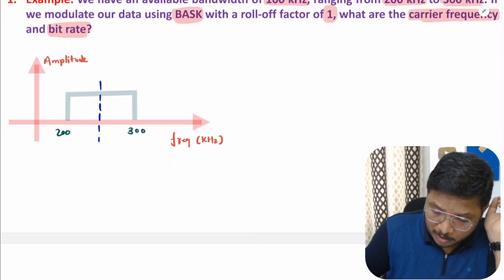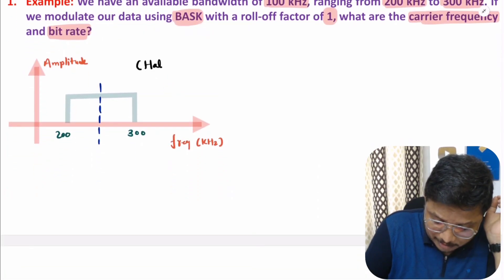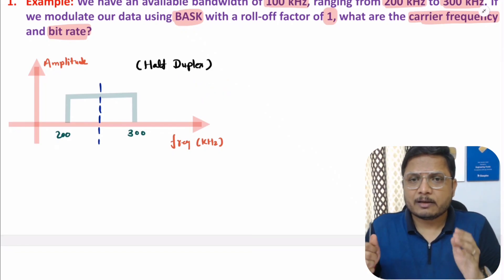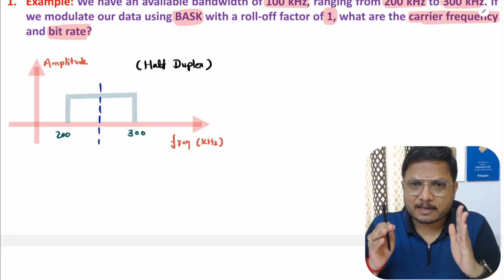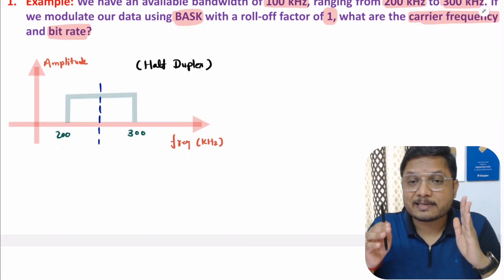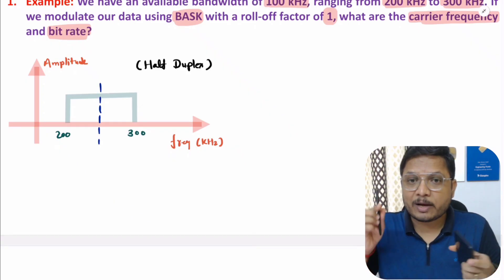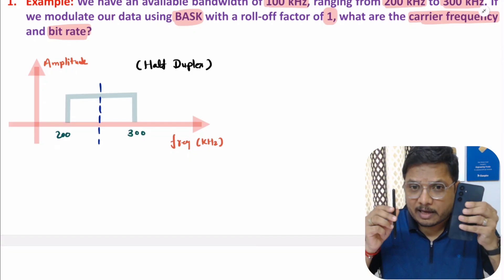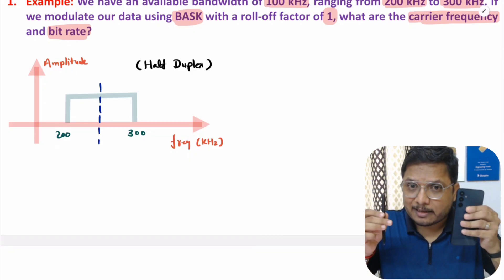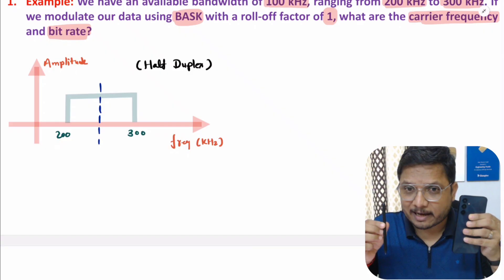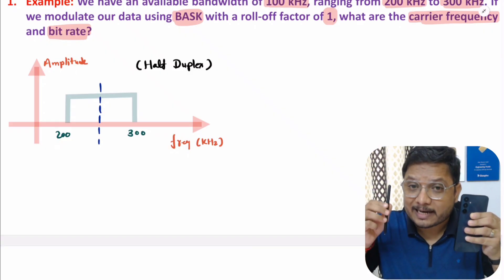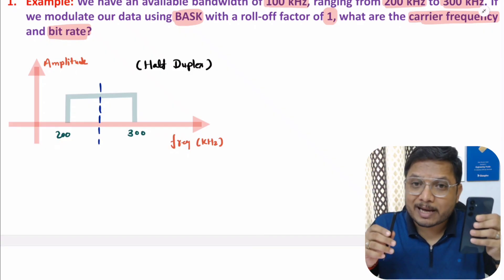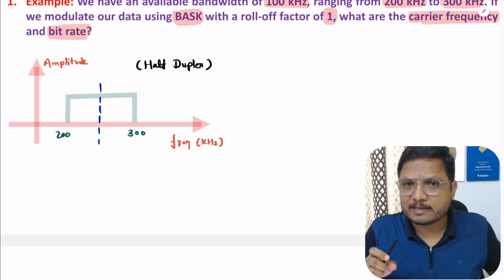In half duplex communication you need to understand how communication happens. If you have two devices, at a time only one device is allowed to transmit the data. Like if you have a satellite and a mobile, if mobile is transmitting data to satellite, at that time satellite can only receive the data. And if satellite is transmitting data to mobile, then mobile can only receive the data.